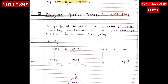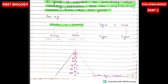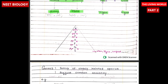The biological species concept was given by Ernst Mayr. It is a group of individuals or potentially interbreeding populations that are reproductively isolated from other such groups. In simpler terms, a biological species is a group of organisms that can reproduce together and produce fertile offspring but cannot reproduce with other groups. This concept emphasizes the importance of reproductive isolation in maintaining species boundaries. For example, horse and donkey together form hinny and mule. Tiger and lion produce liger. Lion, tiger, and leopard are examples of species.